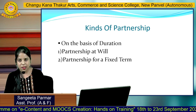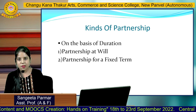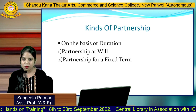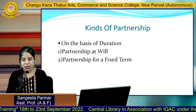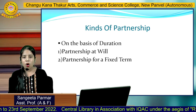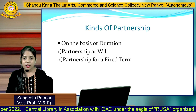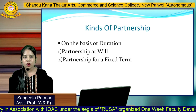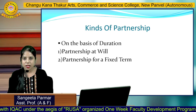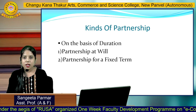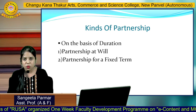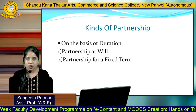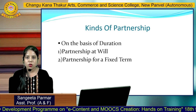Moving to the kinds of partnership, there are two categories. The first category is on the basis of duration. Partnership at will means when a partnership deed does not mention the termination or duration of the partnership at all. Partnership for a fixed term is when a partnership is started for a definite period, which is specifically mentioned in the partnership deed.